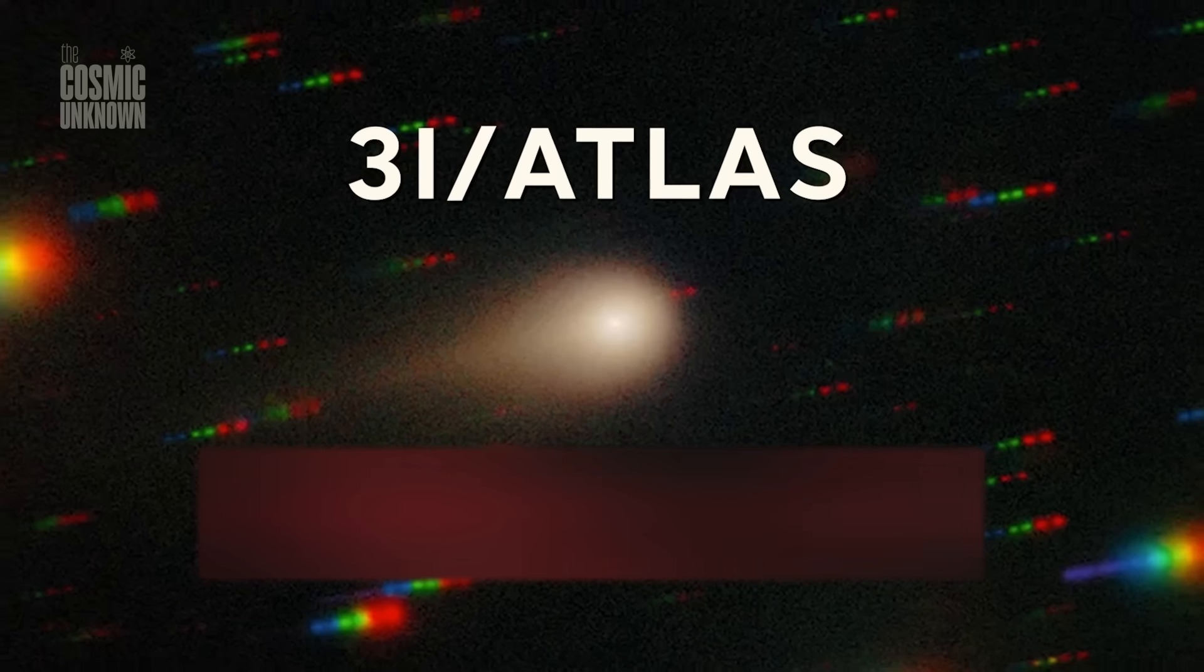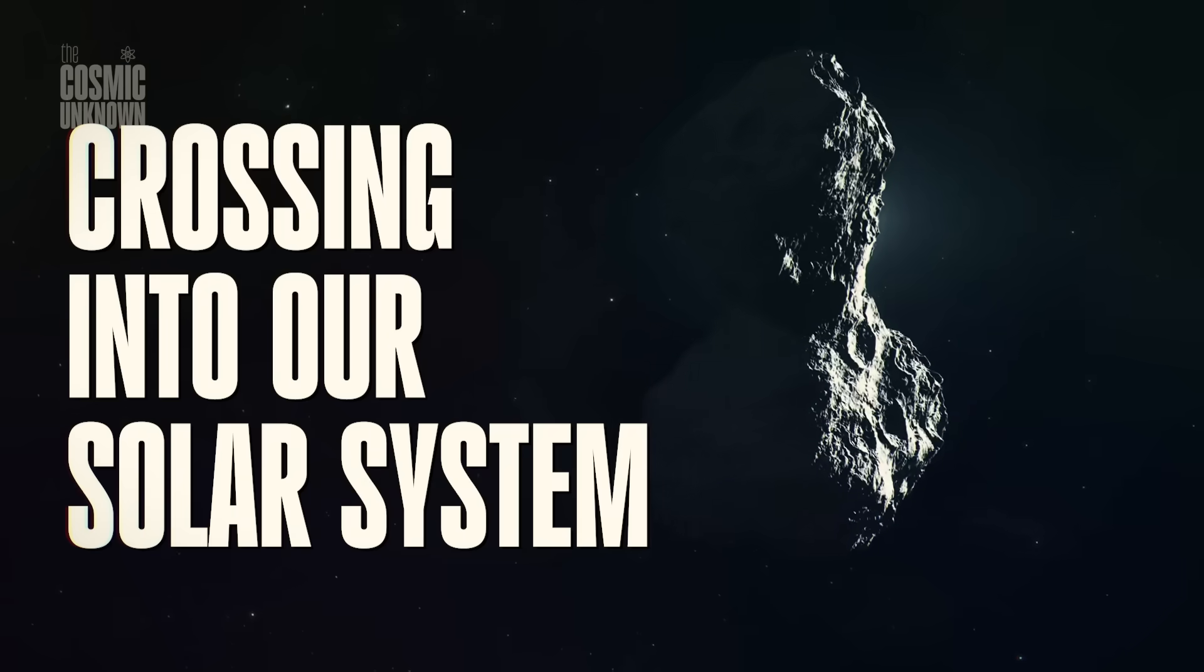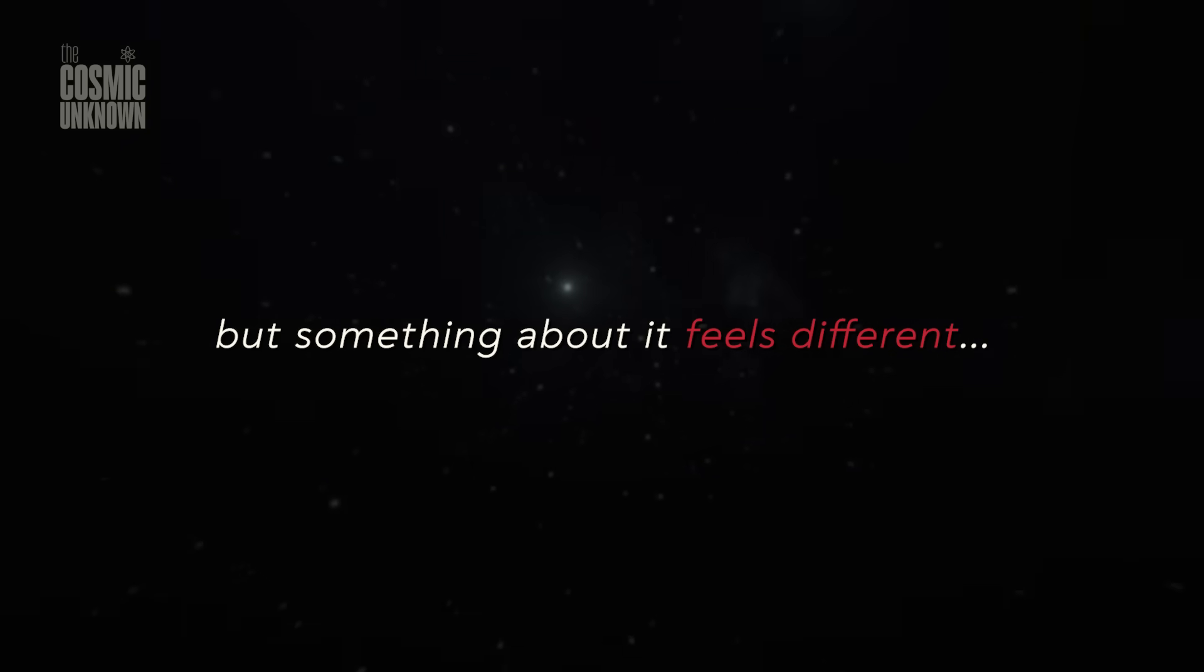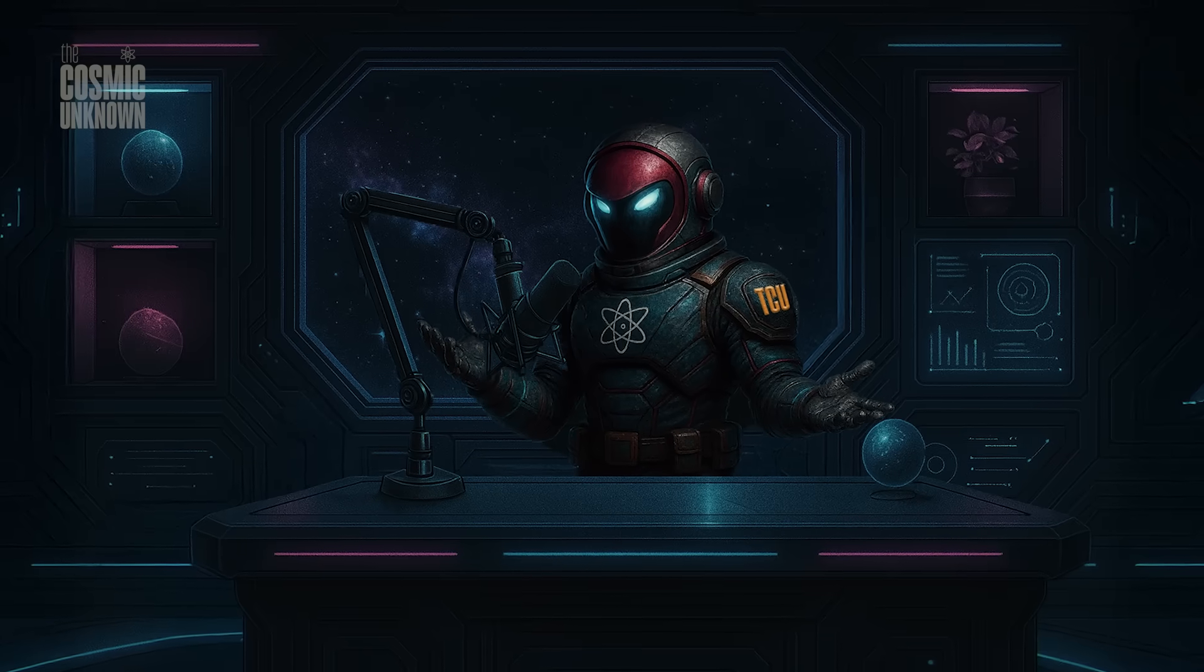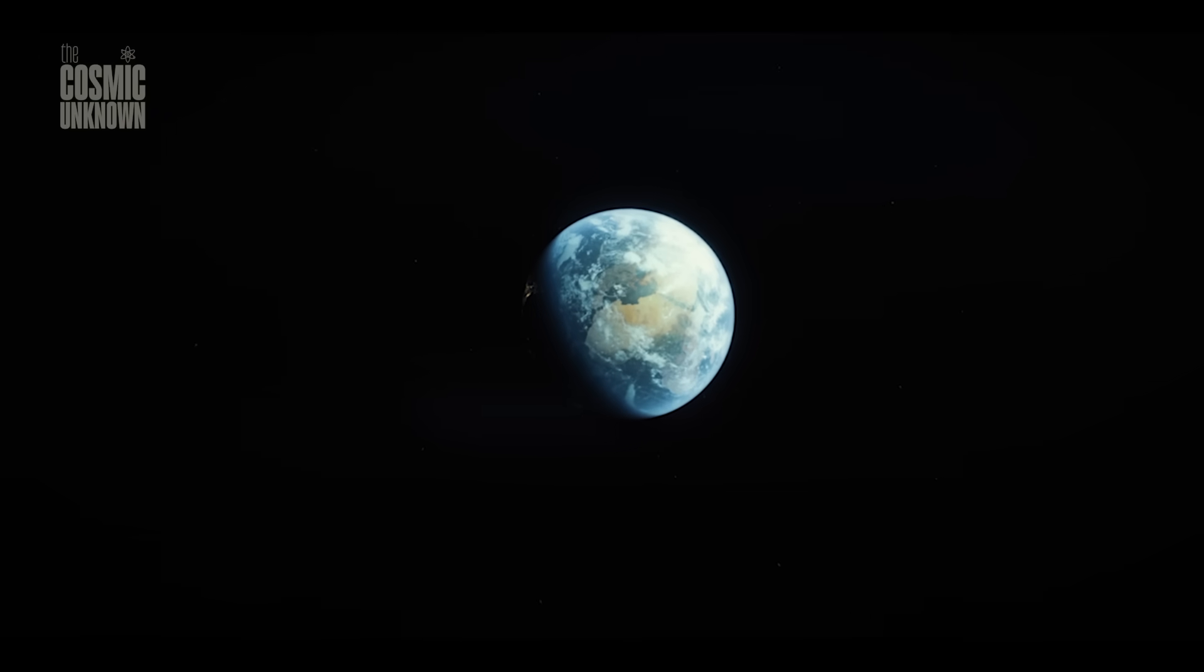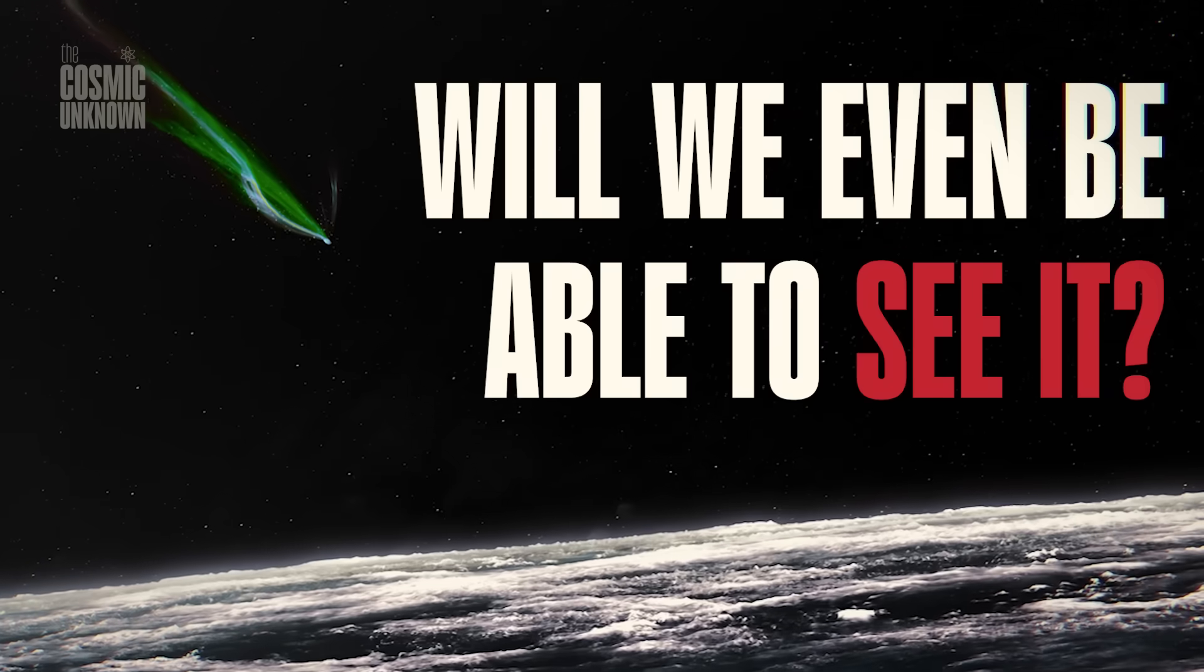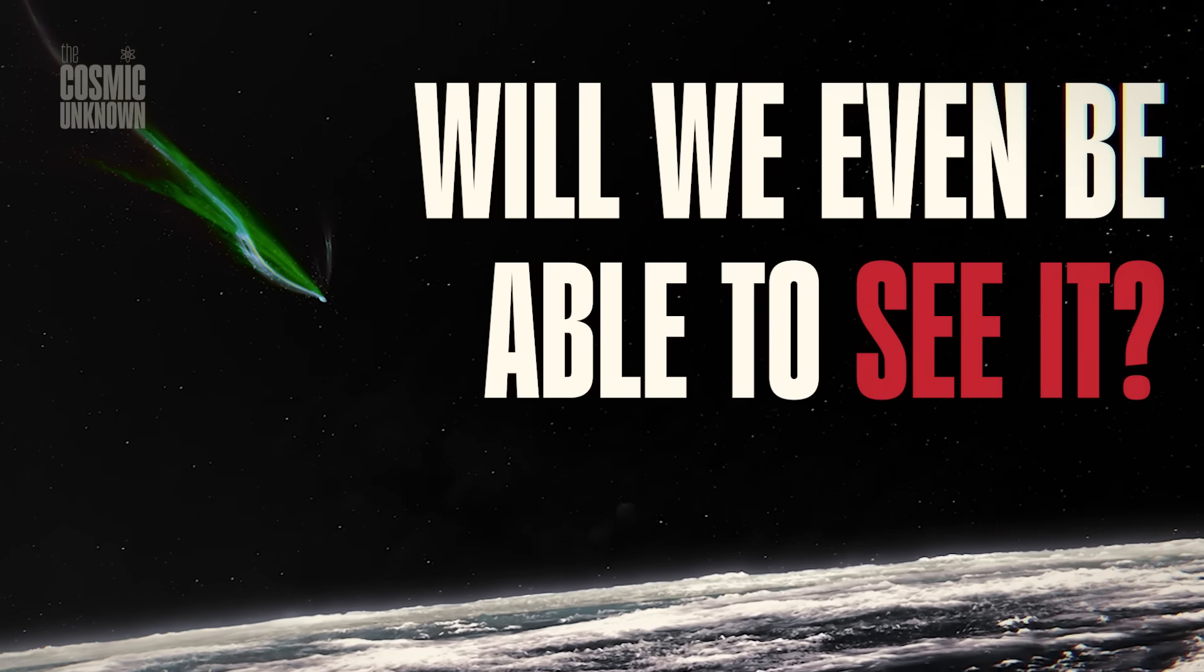They say 3i Atlas is coming, another object from deep space crossing into our solar system. But something about it feels different. It's been showing up in headlines, scattered across YouTube thumbnails, and now one question keeps repeating itself. When will it pass by Earth? Will we even be able to see it? But the answers aren't simple.